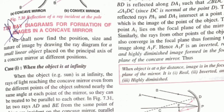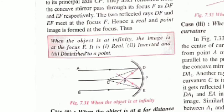Now we will understand ray diagrams for image formation in a concave mirror. The first case is when the object is at infinity — the rays are parallel to the principal axis, so the image will form at the focus. This is a real image. I have already told you how to understand real images and virtual images.